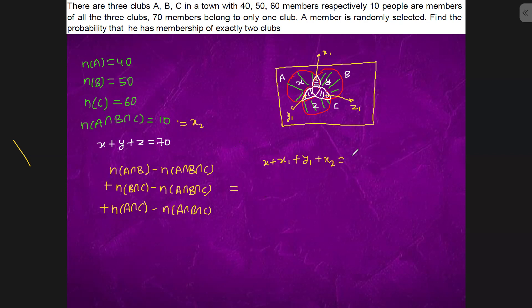So x plus x1 plus x2 is equal to what? n(A) is 40. Similarly we have z plus y1 plus z1 plus x2 equals to 50. Similarly we have y plus x1 plus z1 plus x2 equals to 60.